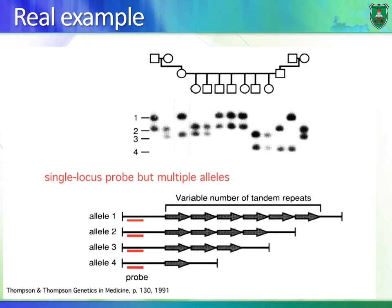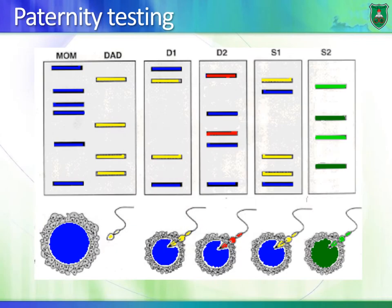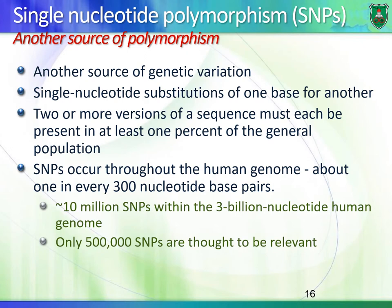We can use this for paternity testing — looking at the pattern between parents versus children. One major feature of the human genome is variation. Variation is not only in VNTRs and STRs; variation can also exist in single nucleotides, known as single nucleotide polymorphism, or SNP, which is a major source of polymorphism.